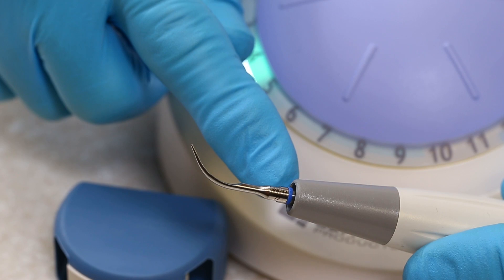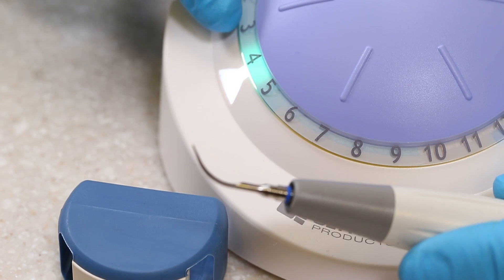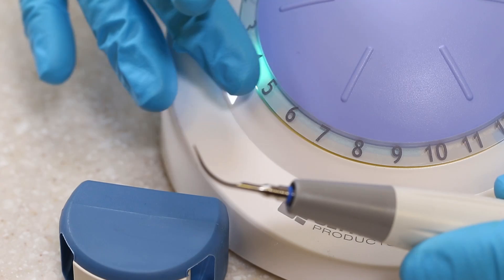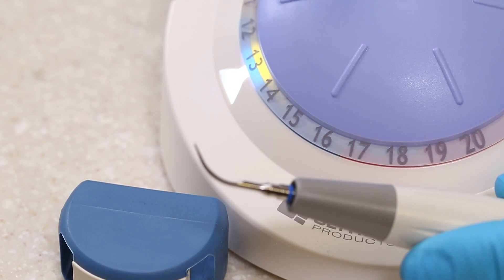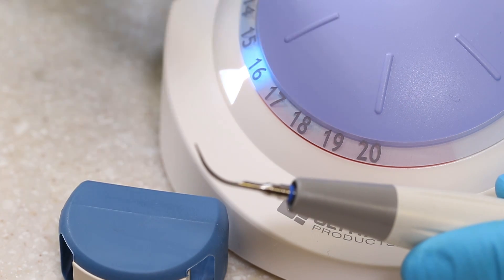If the tip is tight, check to see if your power is set too low. The Ultrawave uses the color coding system to ensure that the proper power is used with the proper tip. Make sure that the color of the tip and the colors shown on the dial match.